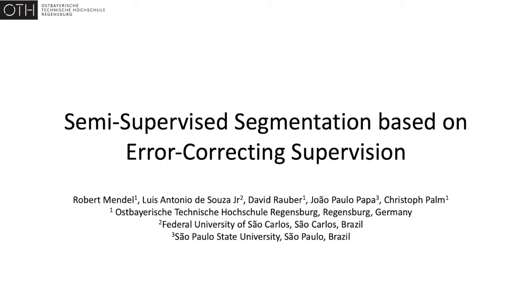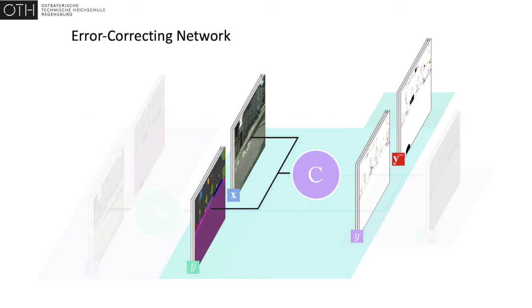Error correcting supervision is a technique for semi-supervised segmentation utilizing two separate networks. A correction network takes an image and its segmentation as input and predicts if the content of the segmentation fits the image.